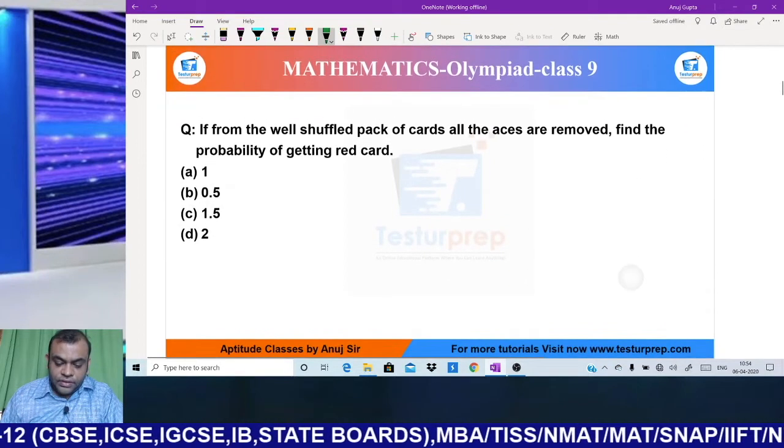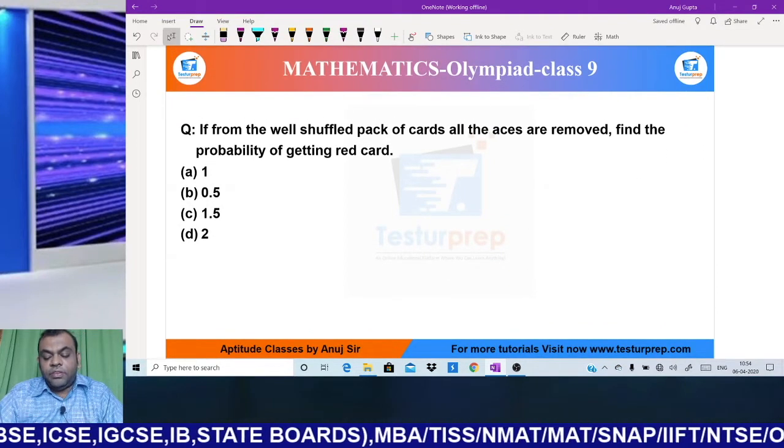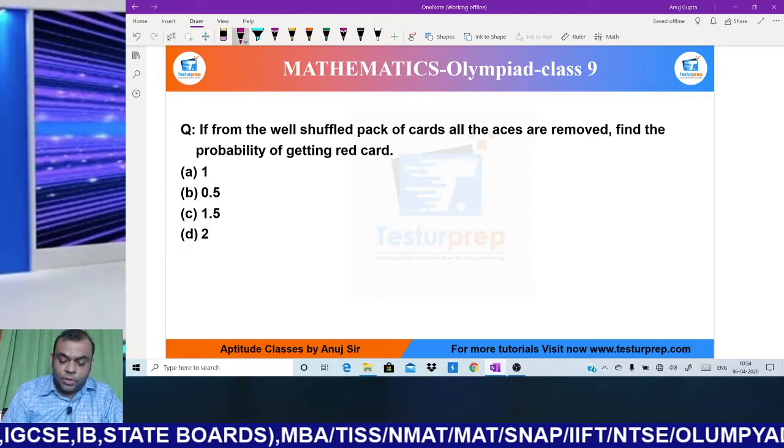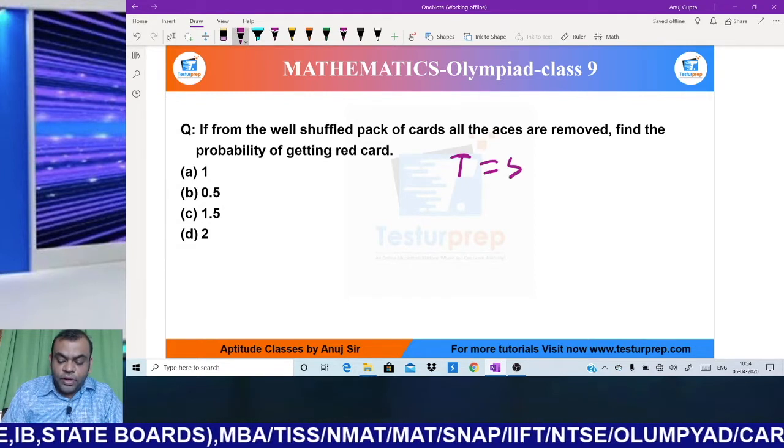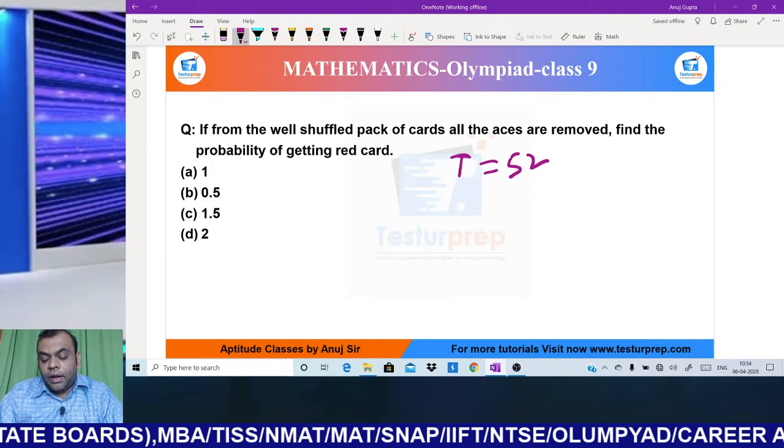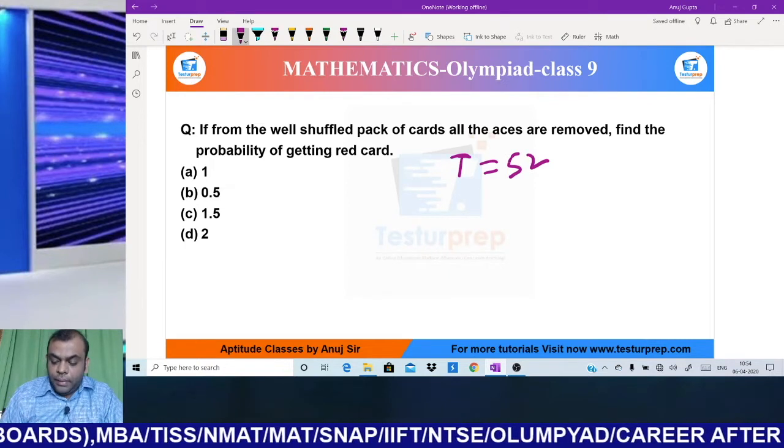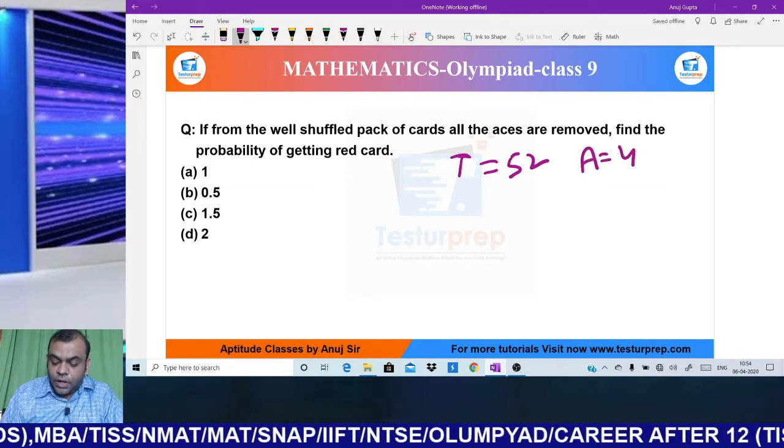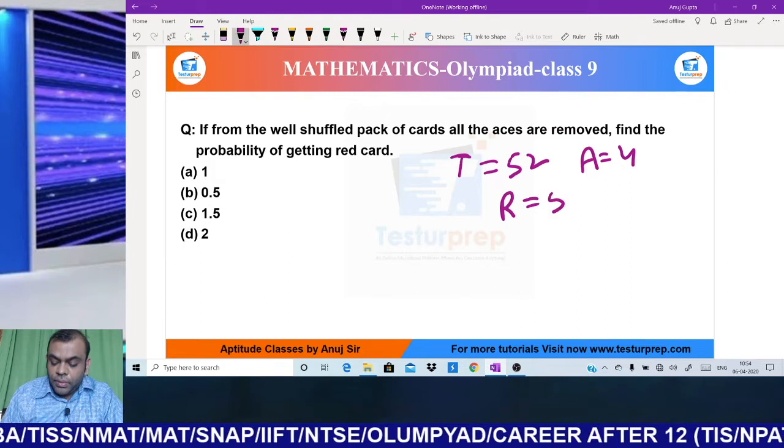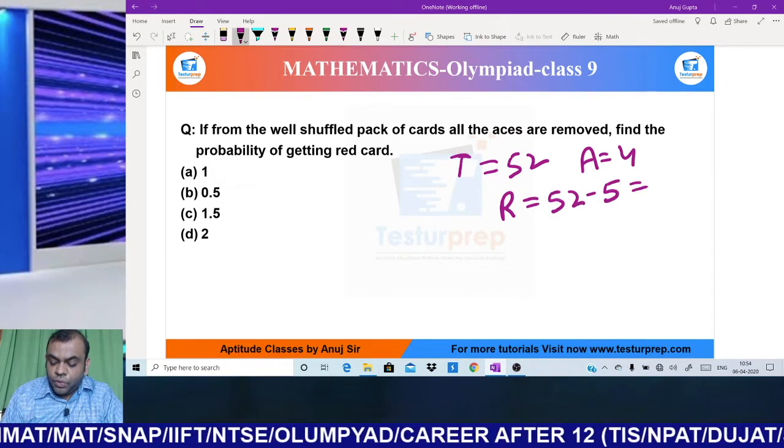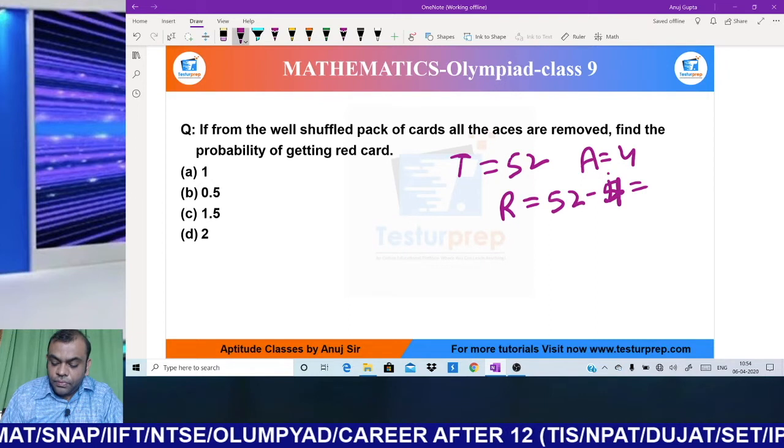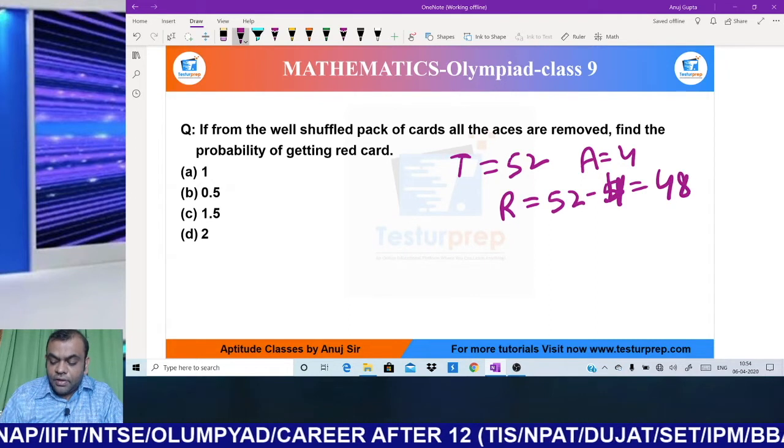My next question says that from a well-shuffled pack of cards - playing cards total are 52 - and all the aces are removed. Aces are 4. If aces are removed, remaining cards would be 52 - 4 = 48.